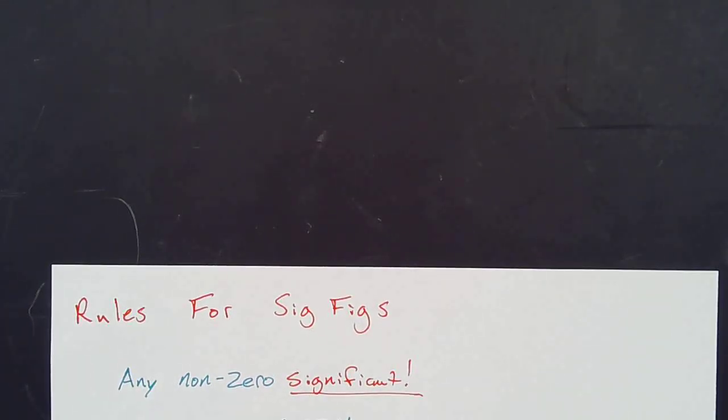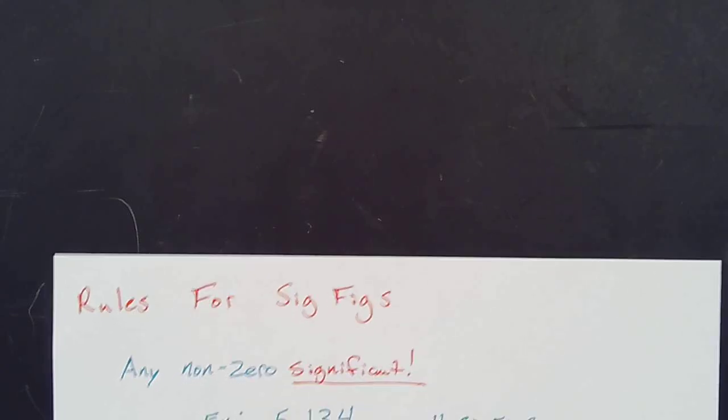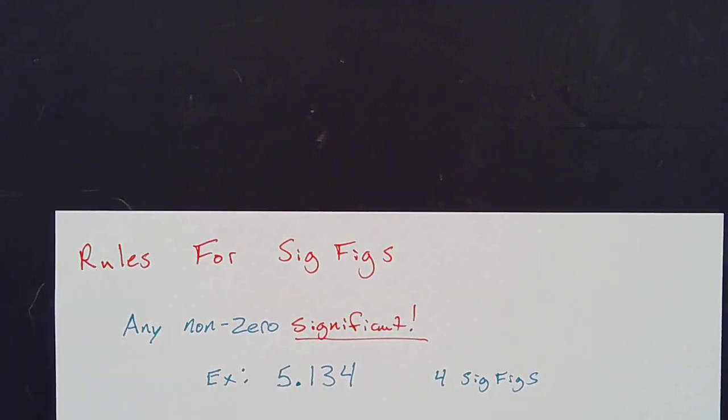So to identify sig figs, there's a few rules. First one is nice and easy. Any non-zero, that's going to be significant. So that's our 5.134. So each one of these, there's no zeros. So each one of those are significant. There's four significant figures here. This is the abbreviation, sig figs.